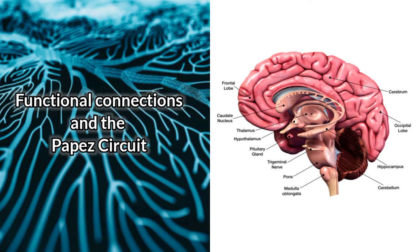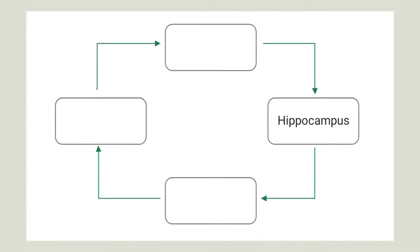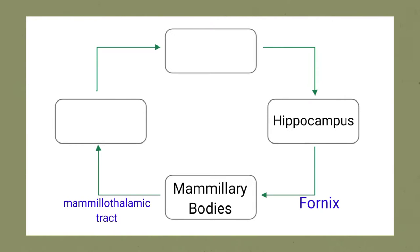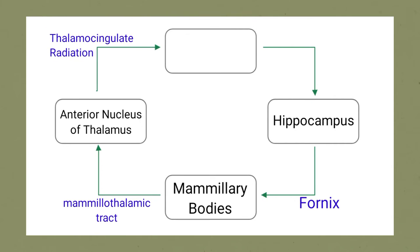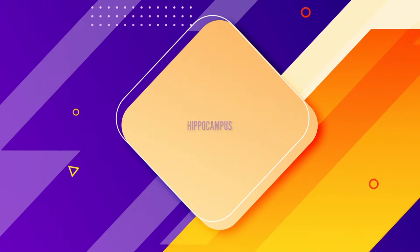The functional connections within the Limbic System are best summarized by the Papez circuit. From the hippocampus, signals are relayed via the fornix to the mammillary bodies, and via the mammillothalamic tract to the anterior nucleus of the thalamus. The thalamocingulate radiation then projects to the cingulate gyrus and back to the hippocampus to complete the circuit. In this circuit, the hippocampus serves as a primary output structure of the Limbic System.